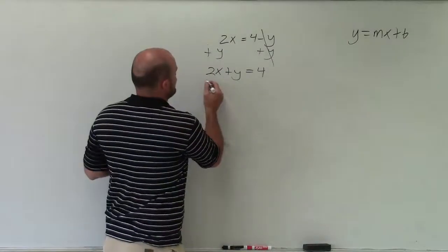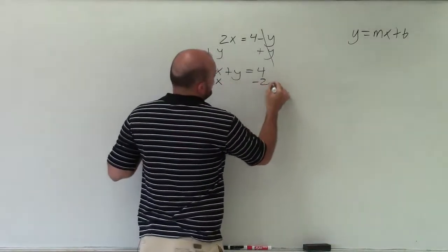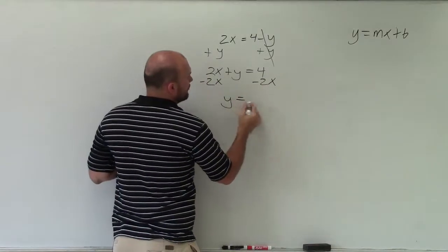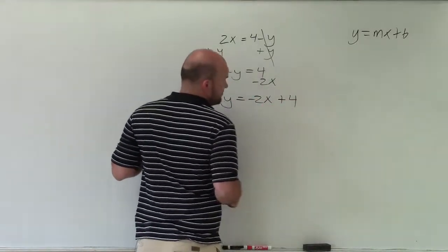I still need to solve for this y. So to do that, I'll subtract a 2x on both sides. Therefore, I have y equals negative 2x plus 4.